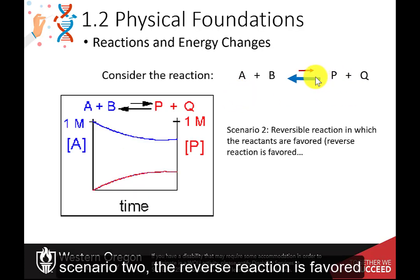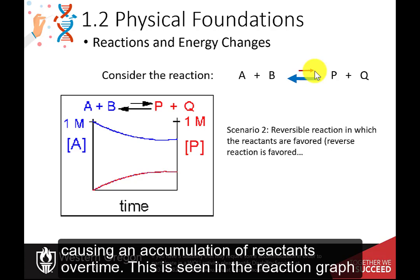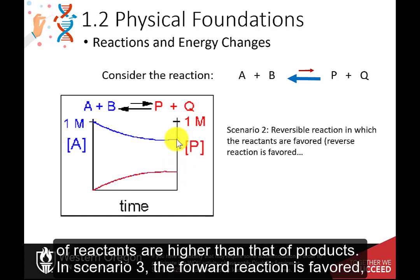In scenario two, the reverse reaction is favored over the forward reaction, causing an accumulation of reactants over time. This is seen in the reaction graph showing that some product is formed, but that when equilibrium is reached, the concentration of reactants is higher than that of products.